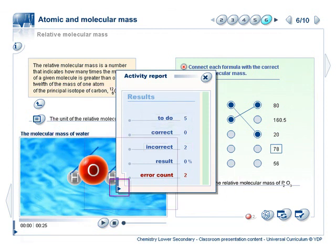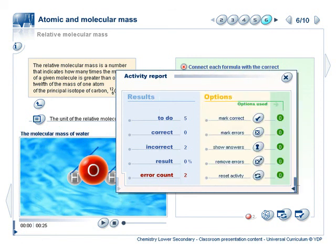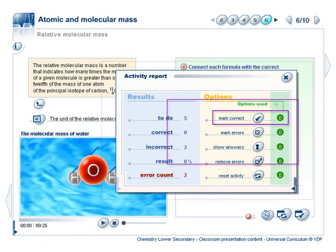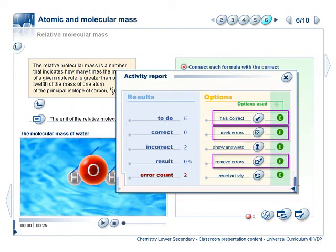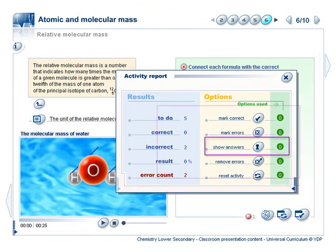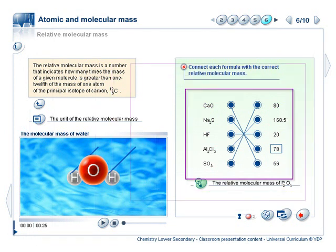Additional options in the activity report are marking of correct answers, marking errors, removing errors, and resetting the whole activity. The show correct answers option is the most valuable for students who feel they've already struggled long enough with an exercise.